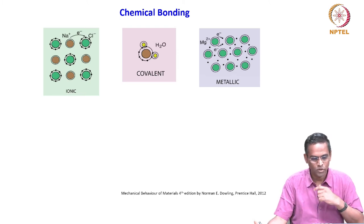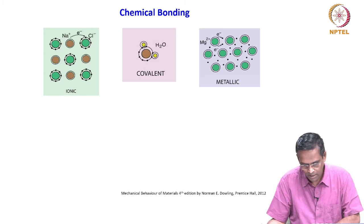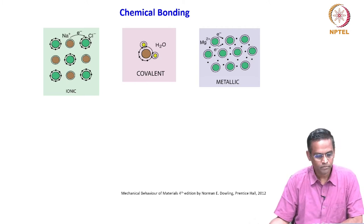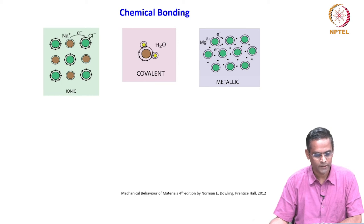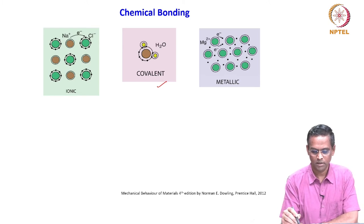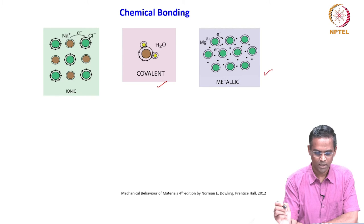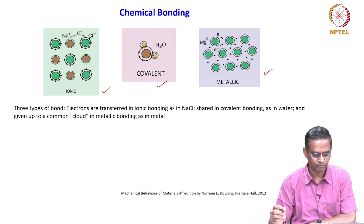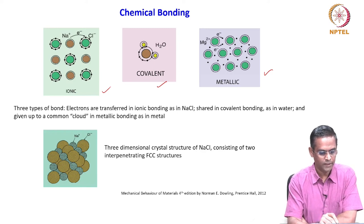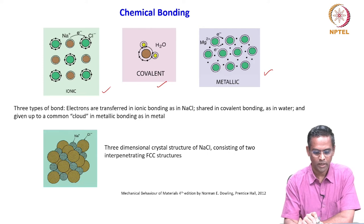Let us now review what chemical bonding is. There are primary chemical bonds and secondary chemical bonds. What we are seeing here is the chemical bonding. The second example is the water molecule, which exhibits covalent bonding. And magnesium metal exhibits a metallic bond. What is the ionic bond? In ionic bonding, as in NaCl, electrons are transferred — sodium ion and chlorine ion. Electrons are transferred from sodium to chlorine; they stay as ions. That is why it is called ionic bonding.